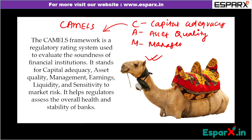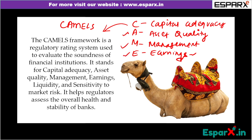M stands for Management — how do you manage a crisis depends on your management techniques, your forecasting ability, and your team. E stands for Earnings — are you able to earn sufficiently from the sources to which you have lent money? Are you able to generate a good income? It all depends on where you have made your investments.